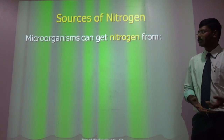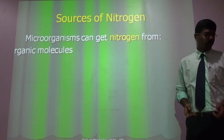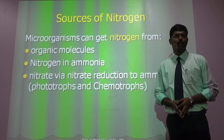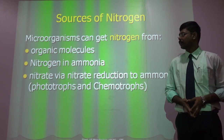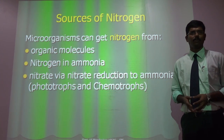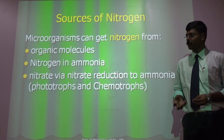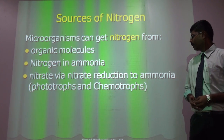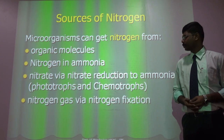What are the sources of nitrogen for microorganisms? Microorganisms can get nitrogen from any type of organic molecule, including water molecules or oxygenated compounds. Nitrogen can also come from ammonia — when farmers apply urea, a process called ammonification occurs, liberating ammonia and thereby nitrogen. Nitrogen can also be obtained by nitrate reduction to ammonia using photo-autotrophic chemotrophs.